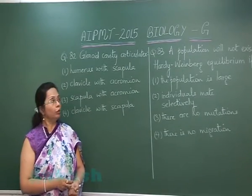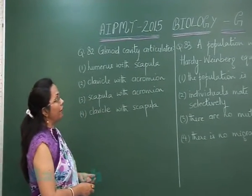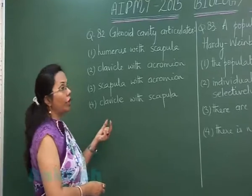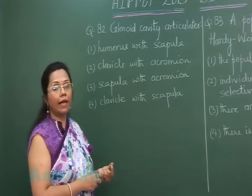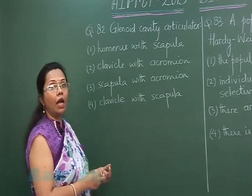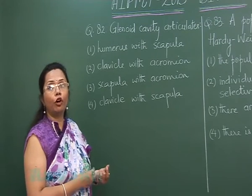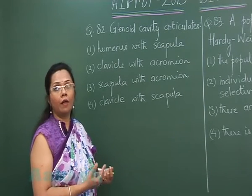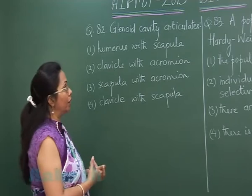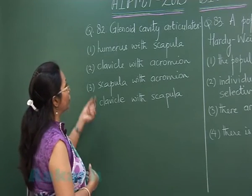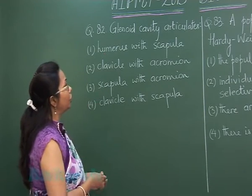Question 82: The glenoid cavity is in the scapula, the shoulder blade, and it articulates with the head of the humerus, forming a ball and socket joint, which is our shoulder joint.